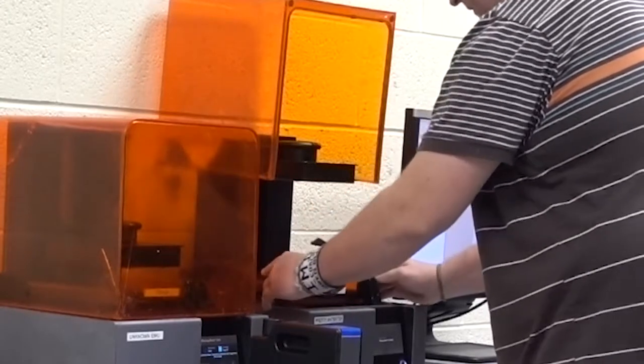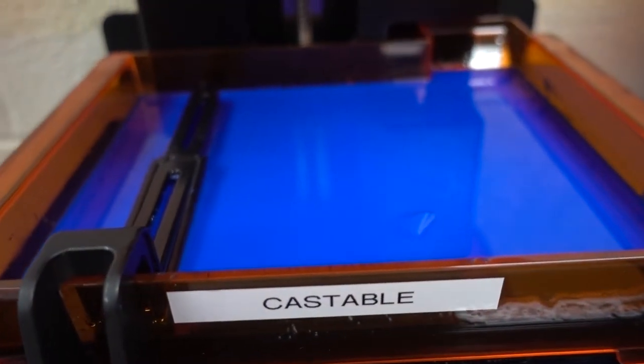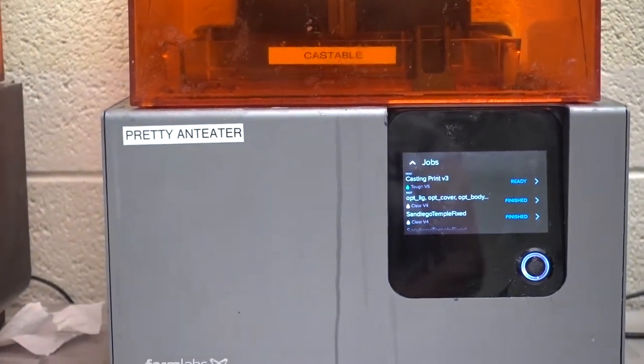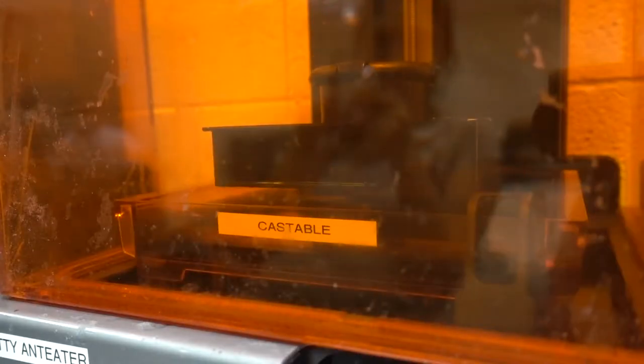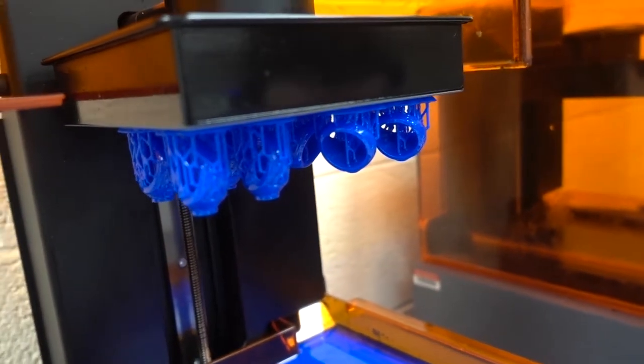The 3D printer has a resin tank on the bottom and a build plate on top. The build plate comes down and sits in the resin, then a laser hits it in different spots and builds the ring layer by layer. When the laser hits the resin, it cures it instantly and adheres it to the next layer.